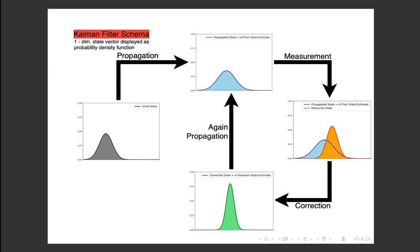If the system model was perfect, we wouldn't have to take measurements. In the second step, the correction step, we are taking a measurement of the system. Here, we need an observation model that is telling us how our observables are related to the state vector components, because usually we cannot measure directly the state vector components. So, after the measurement, we have two states: the propagated state and the measured state. In the correction step, we are combining these two states to get a corrected state with decreased uncertainty, depicted in green here. And then we are propagating again.